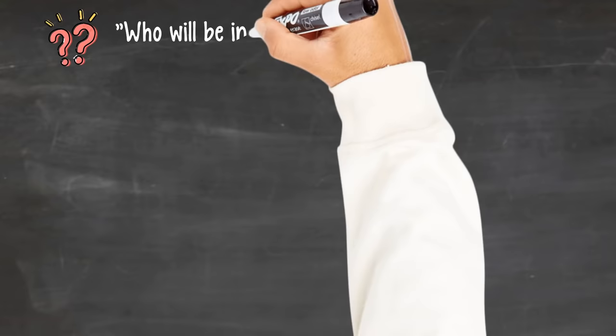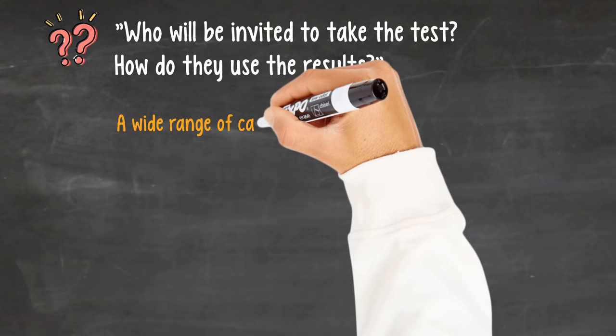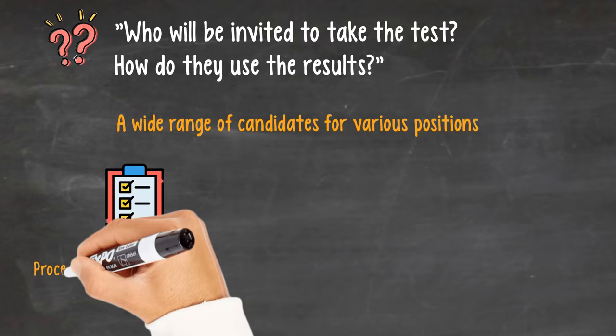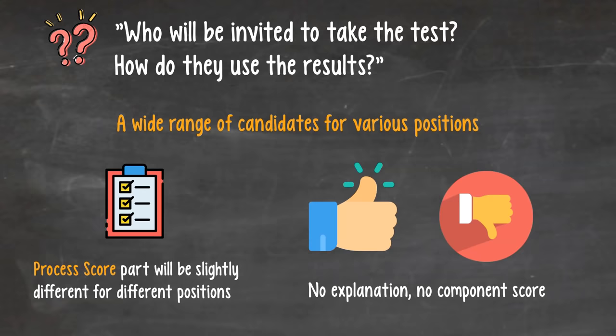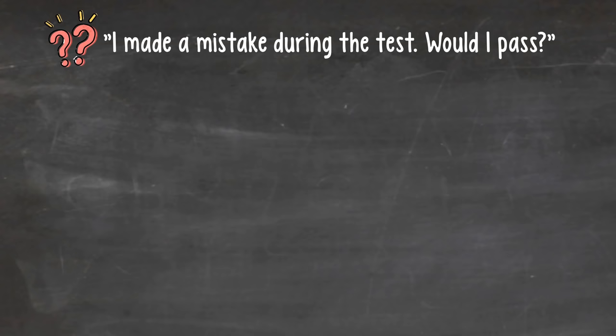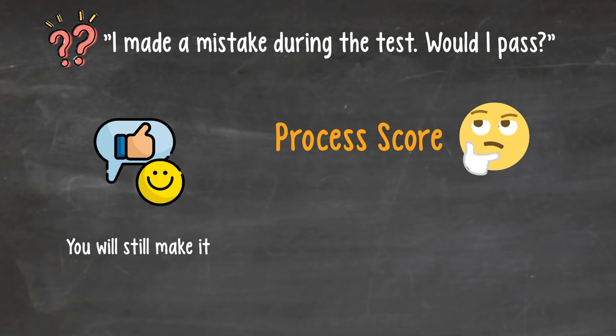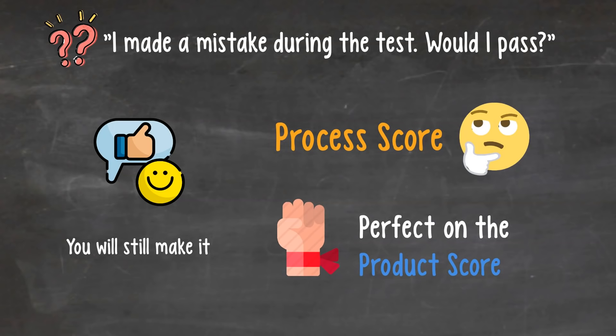The cheapest mouse will serve just as well as the best. All actions in the game are done by clicking, so having a mouse instead of a touchpad will vastly speed up your game and leave more time for the calculations. Question 3. Who will be invited to take the test and how do they use the results? The PSG is used to screen a wide range of candidates for various positions, not just the traditional consulting track. The grading mechanism, especially the process score part, will be slightly different for different positions. You will only be informed about the final result. Two simple words. Pass or fail. No explanation. No component score. No nothing. Question 4. I made a mistake during the test. Will I still pass? This is like missing one question in the PST. Of course, if you do well in the other parts, you'll still make it. With that said, given that the process score can be unpredictable, I believe we should strive to be perfect on the product score. It's totally possible to do so if you strictly follow my methodology.